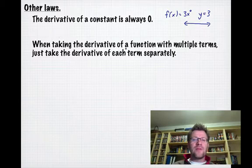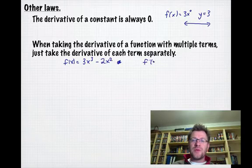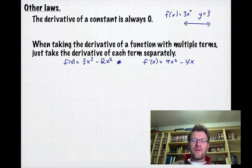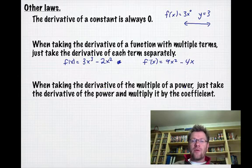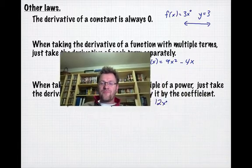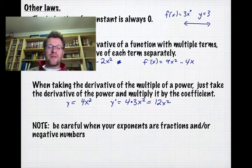Second, when taking the derivative of a function with multiple terms, take the derivative of each term separately. If f(x) = 3x³ - 2x², the derivative is 9x² - 4x. Keep the subtraction sign and take each term's derivative separately. When taking the derivative of a multiple of a power, multiply the coefficient by the power's derivative. For y = 4x³, we get y' = 12x² by multiplying 4 by the 3 we bring down. Finally, be careful when exponents are fractions or negative numbers, because it's easy to make mistakes when subtracting 1.